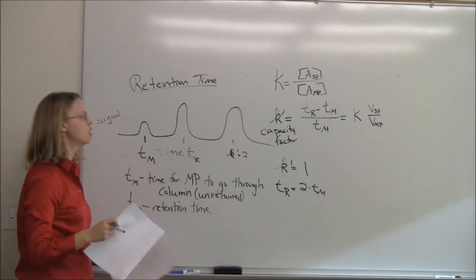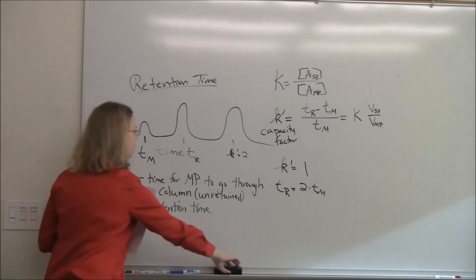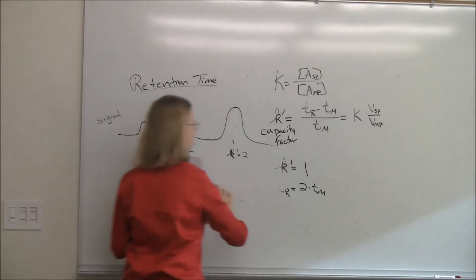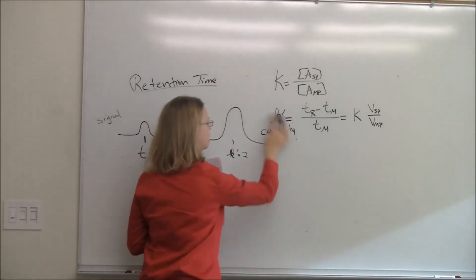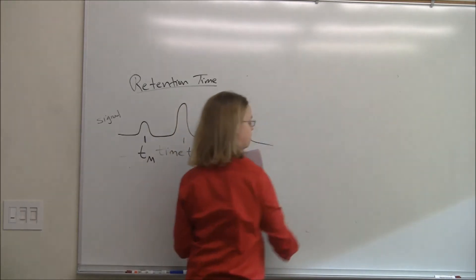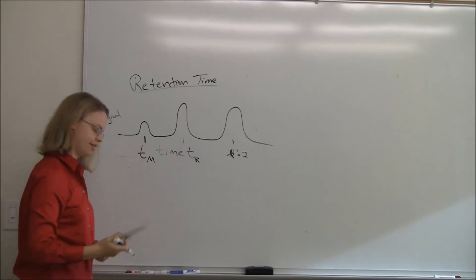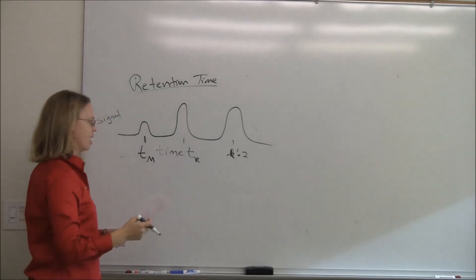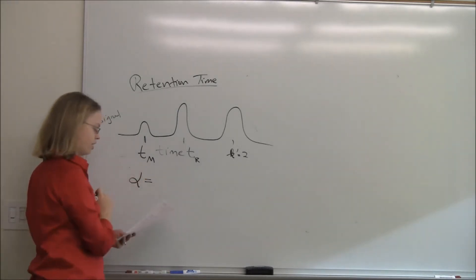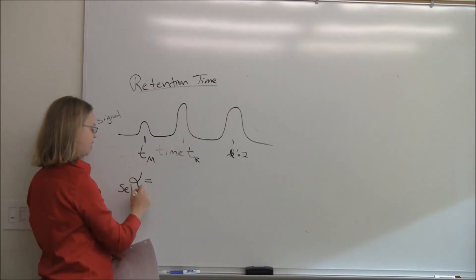That's how we look at a chromatogram with one peak. What if we have two peaks? Separations is usually about separating two compounds that appear to separate. So we define a factor called alpha — the selectivity factor.